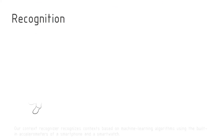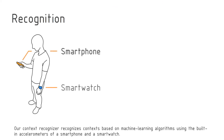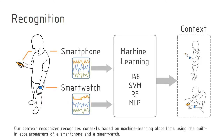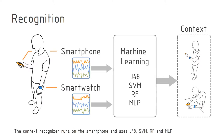Our context recognizer recognizes context based on machine learning algorithms using the built-in accelerometers of a smartphone and a smartwatch. The context recognizer runs on the smartphone and uses J48, SVM, RF, and MLP.